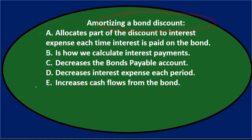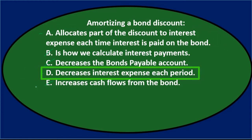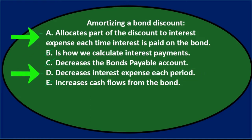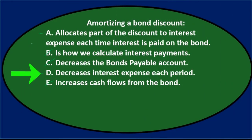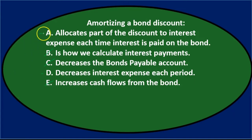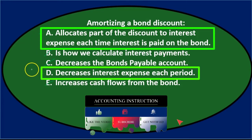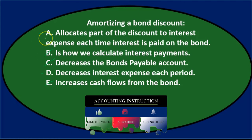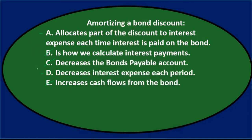Amortizing a bond discount is either A — allocates part of the discount to interest expense each time interest is paid — or D — decreases interest expense each period. Note these are related: A says it allocates the discount to interest expense, meaning it does something to interest expense, and D says it decreases interest expense. If D is true, A must also be true; but if A is true, D doesn't necessarily have to be true. So narrowing down, it has to be A.